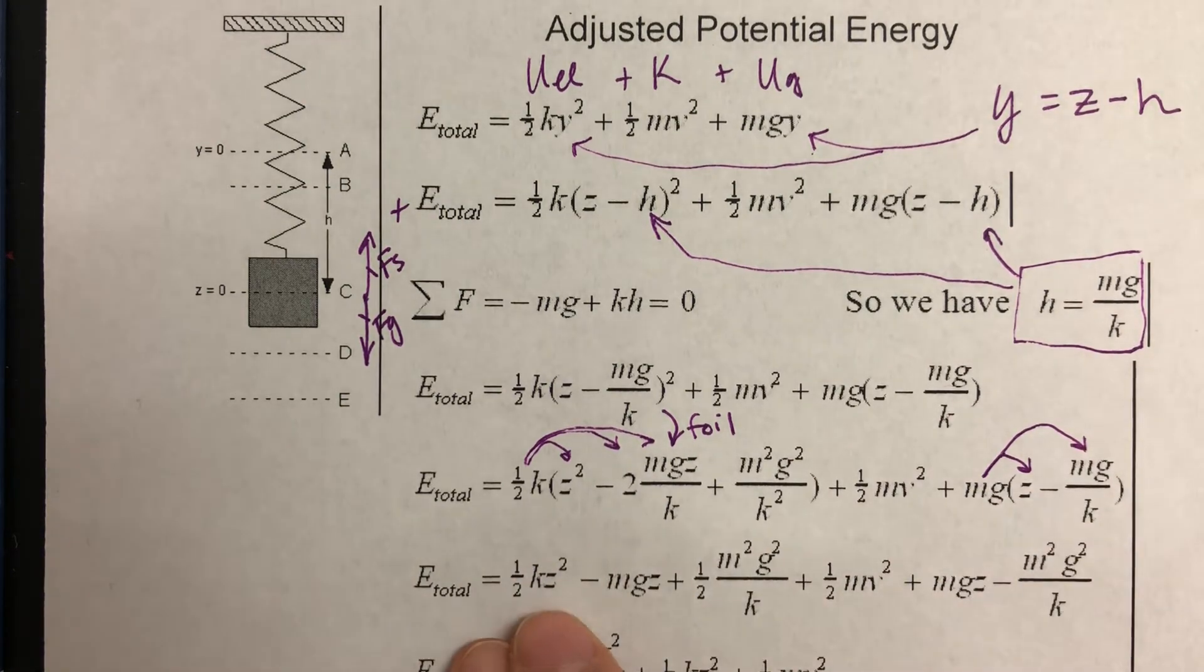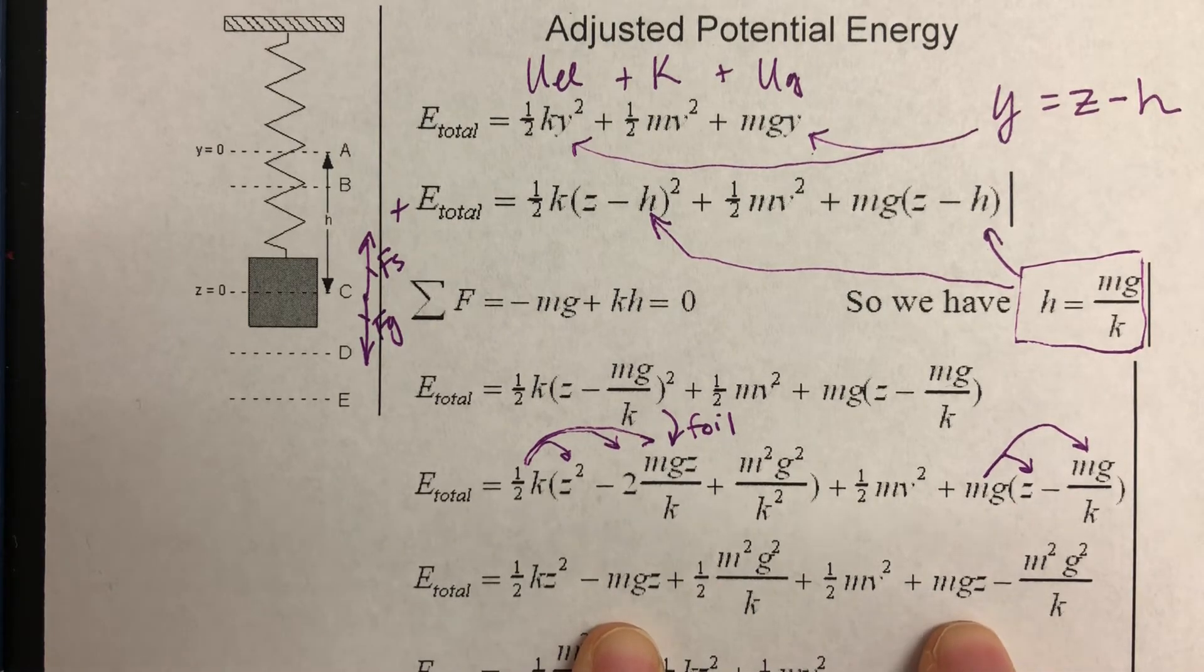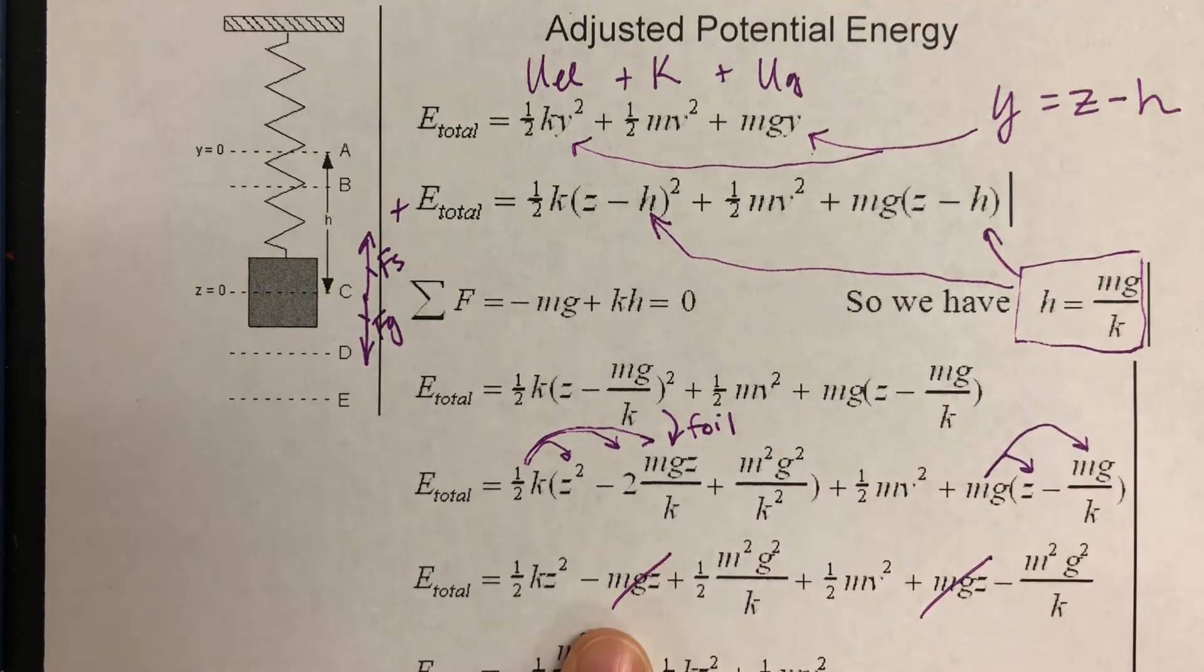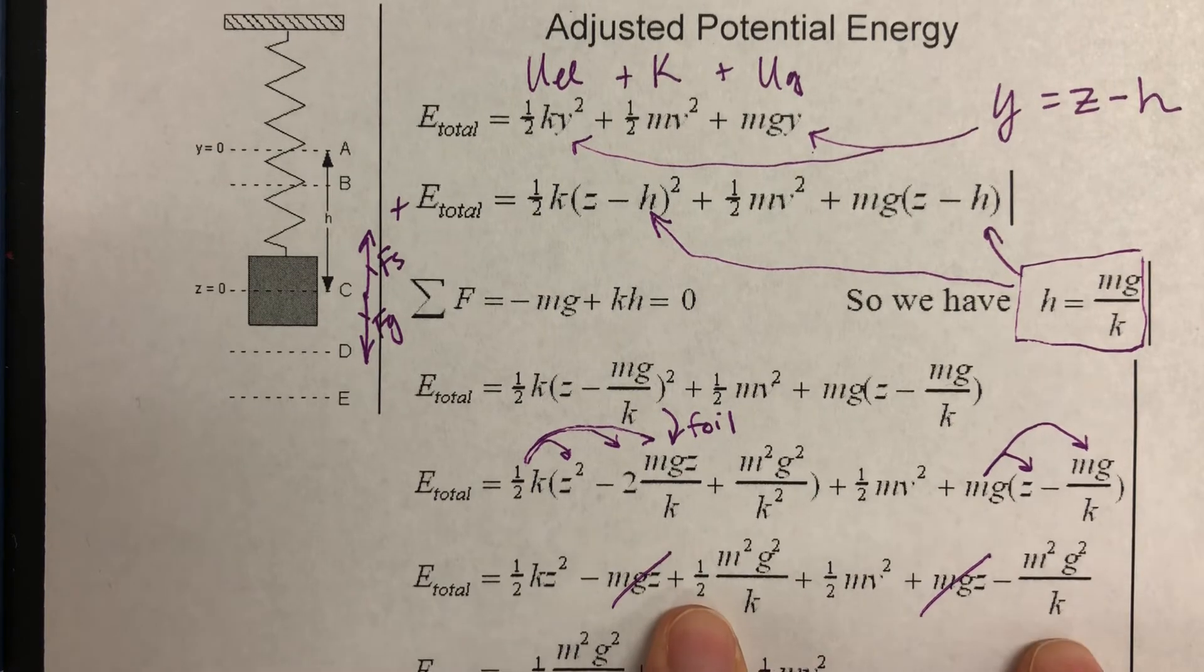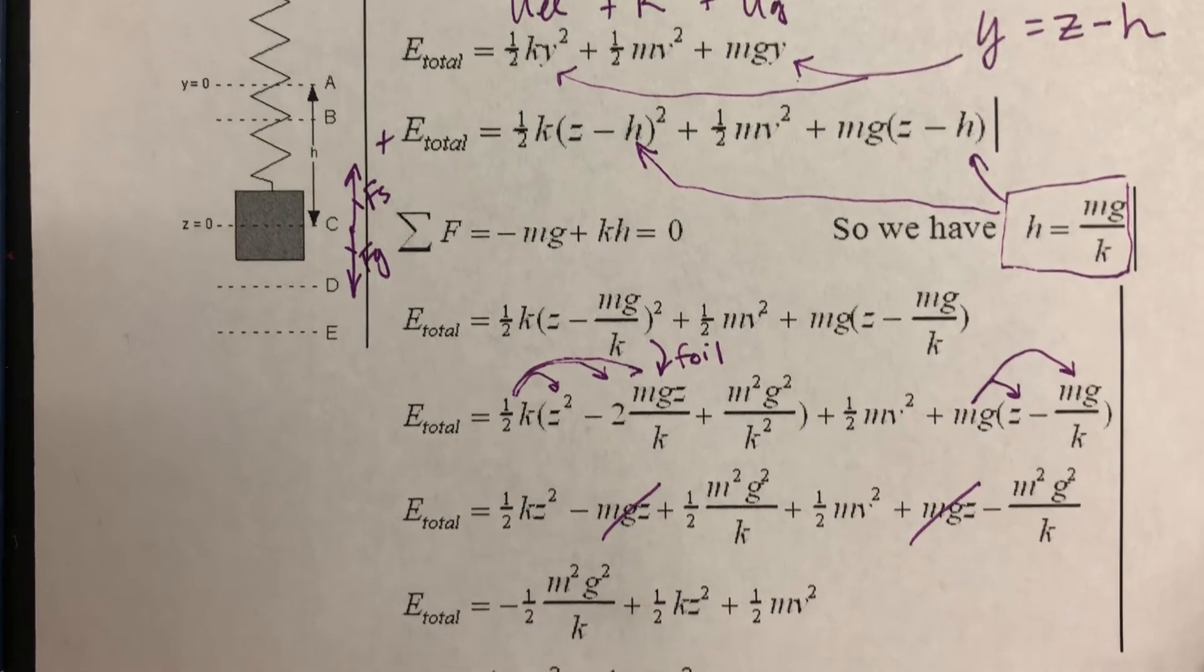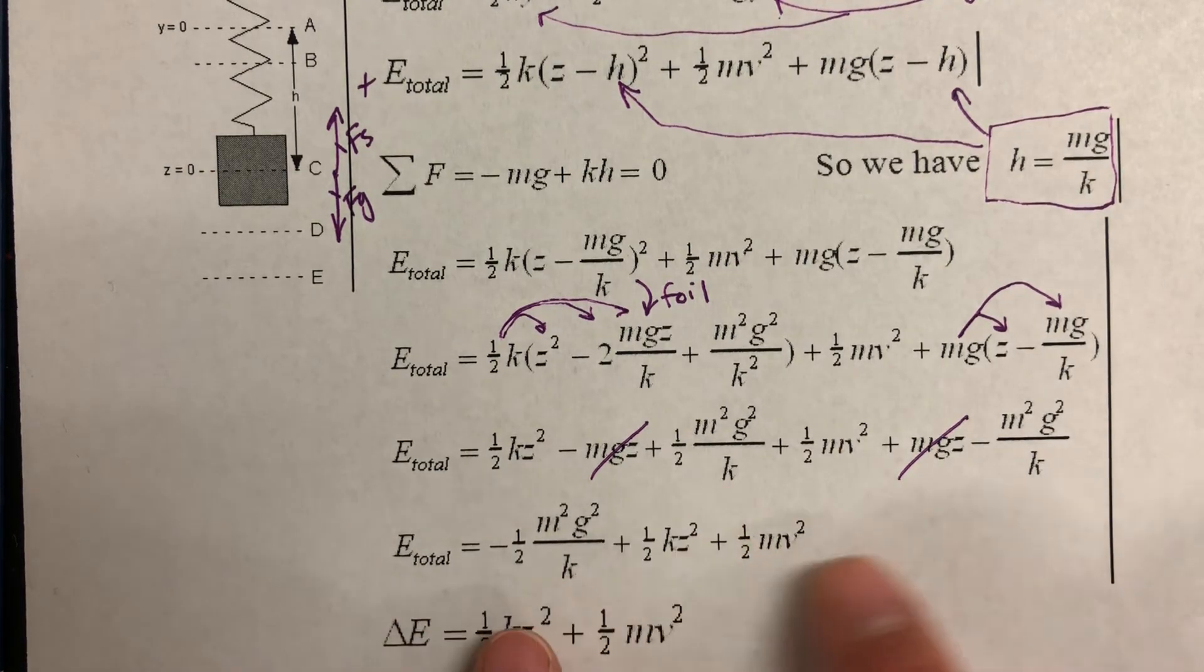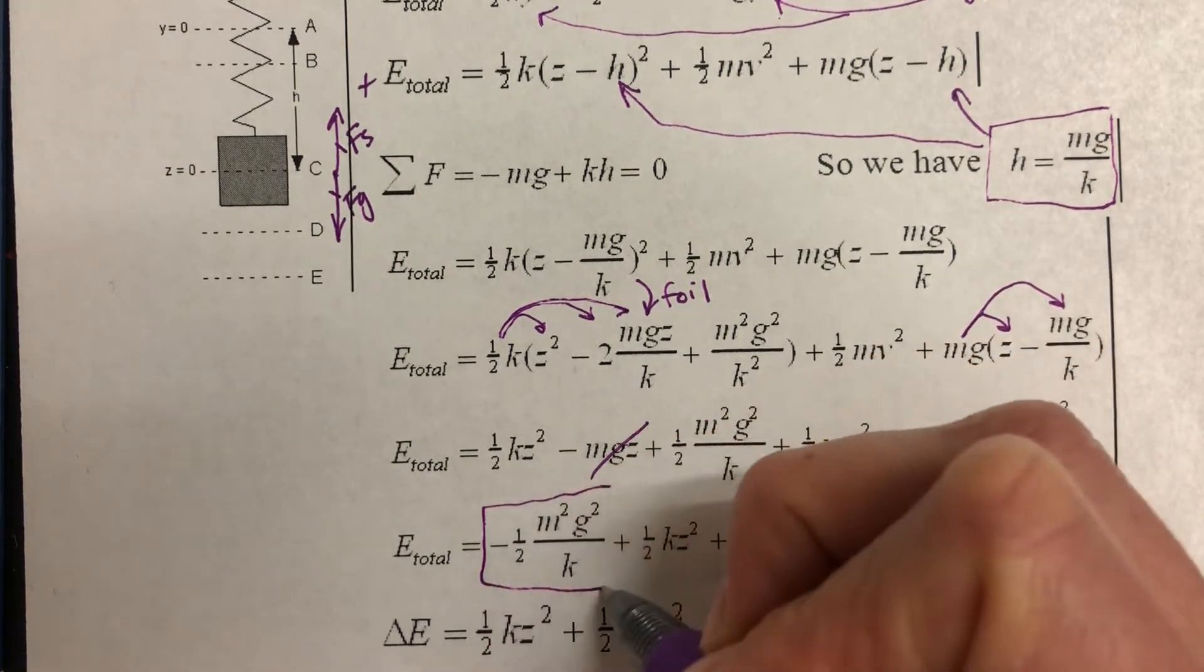So once we do all that, we end up with 1/2 kz squared minus mgz plus 1/2 m squared g squared over k, plus 1/2 mv squared. Our kinetic energy is still hanging out there. Plus mgz minus m squared g squared over k. So you should notice that mgz's cancel. And these terms are the same, the m squared g squared over k. We have a plus 1/2 and a minus one. So we are going to move to the next line here. And we see that we can combine these two into negative 1/2 m squared g squared over k. This whole thing is constant. These are all constants.